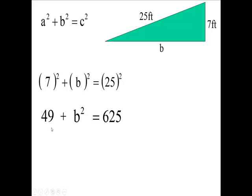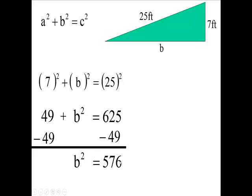Now we're going to subtract 49 from both sides of the equation. You're going to end up with B squared equals 576.